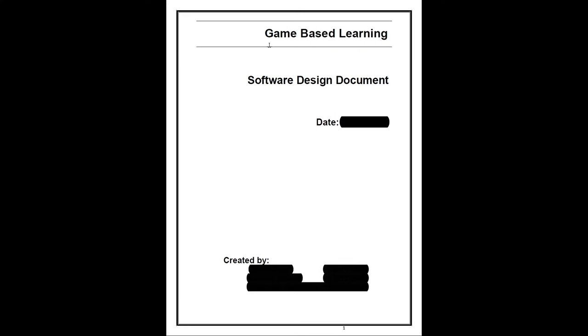In this lecture, we are going to see a document that is created using UML for a particular system. The objective of this lecture is to demonstrate how to create a design document using object oriented approach and representing the design using UML. This is about developing a game for learning — the name of the system is Game Based Learning.